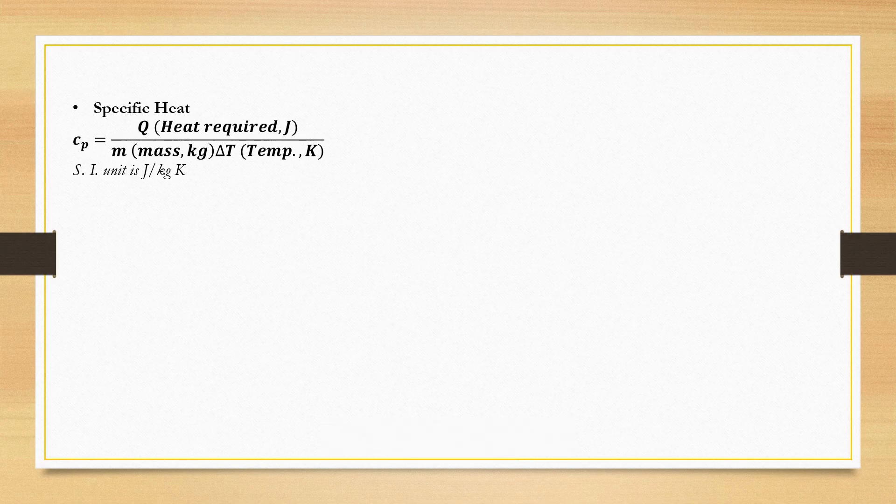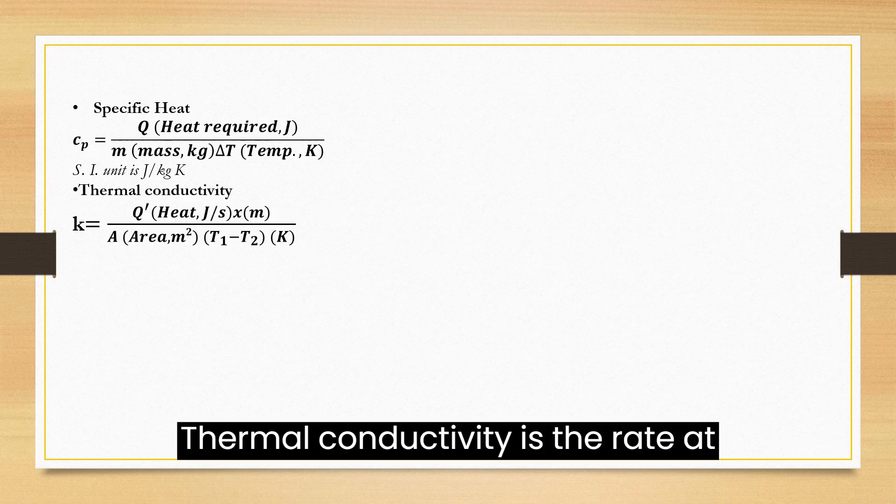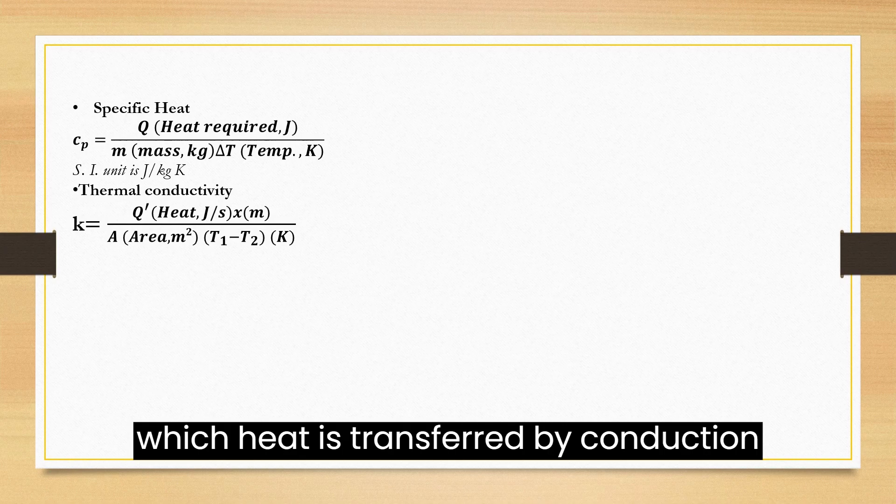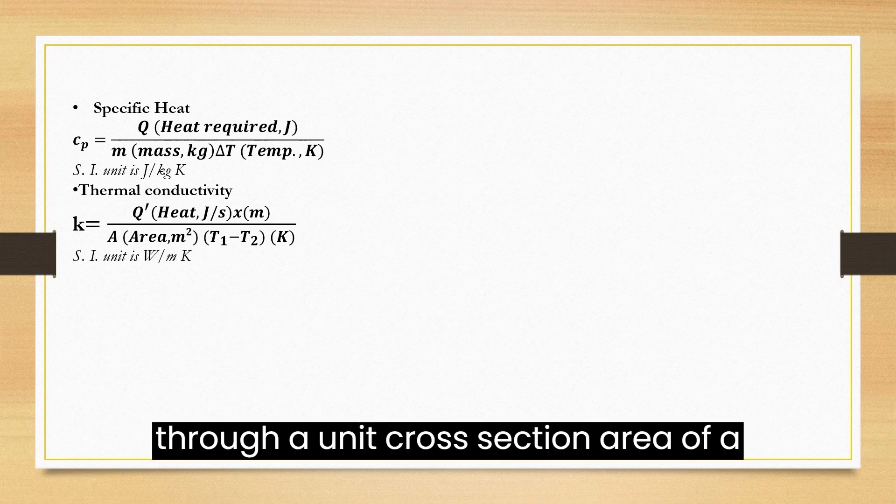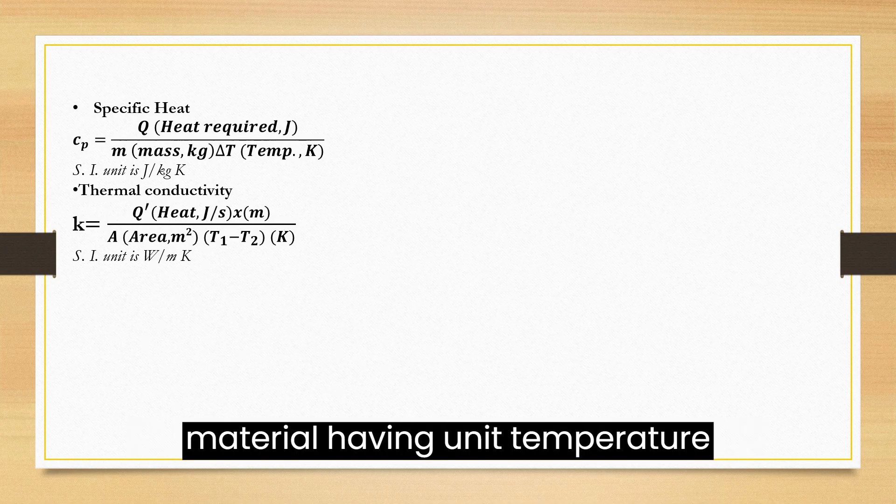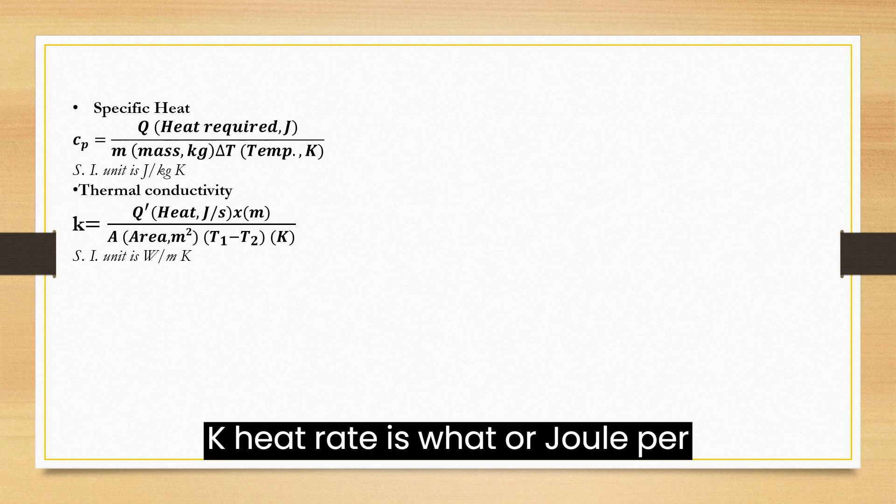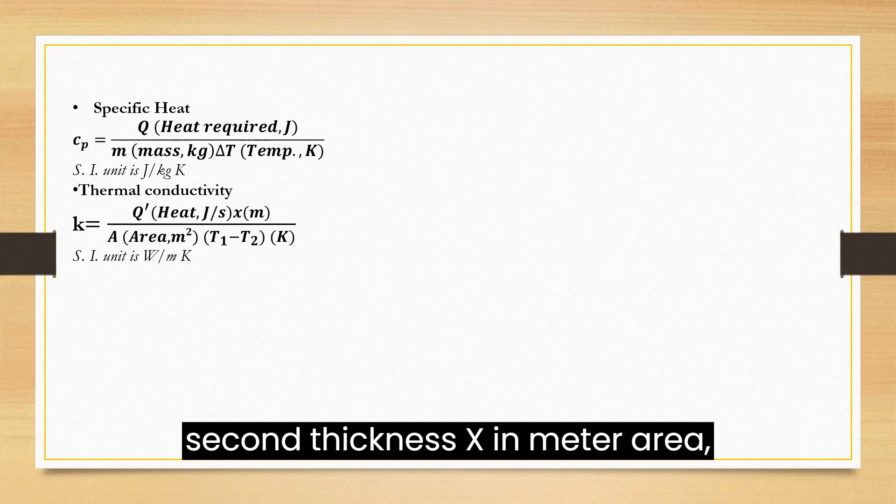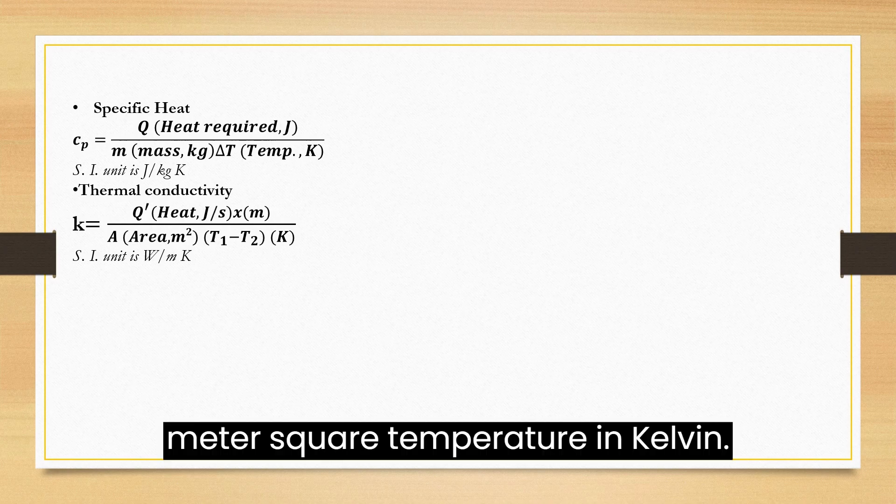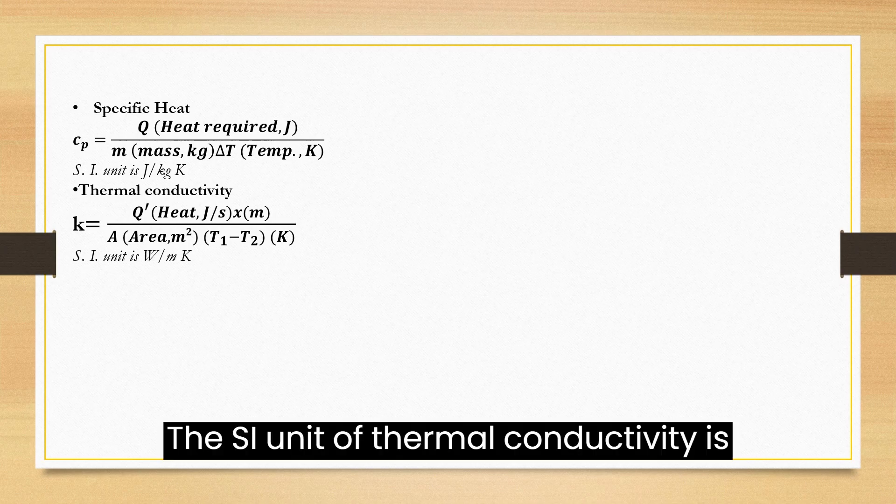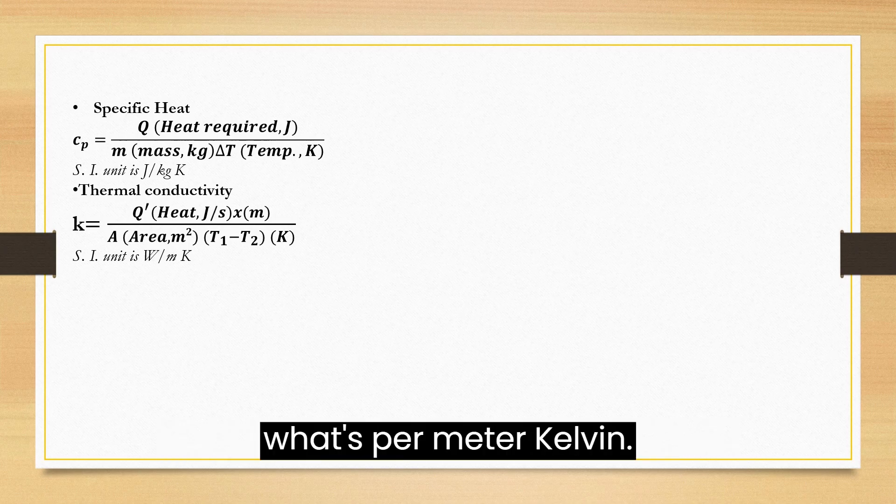Next, Thermal Conductivity is the rate at which heat is transferred by conduction through a unit cross-section area of a material having unit temperature difference. Denoted by small k, where heat rate is Watt or Joule per second, thickness X in meter, area in meter square, and temperature in Kelvin. The SI unit of thermal conductivity is Watts per meter Kelvin.